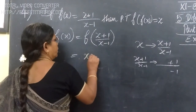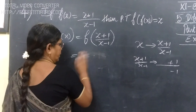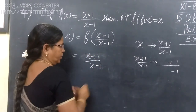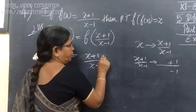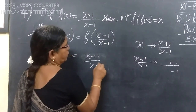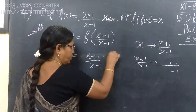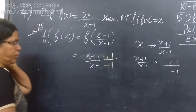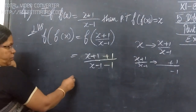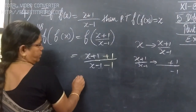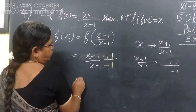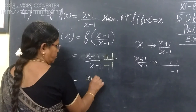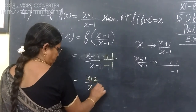So we are writing x plus 1 by x minus 1 into f. This one is using x plus 1 by x minus 1, substituting into x plus 1 by x minus 1, giving x plus 2 by x minus 2.